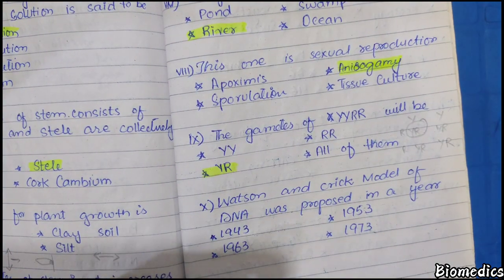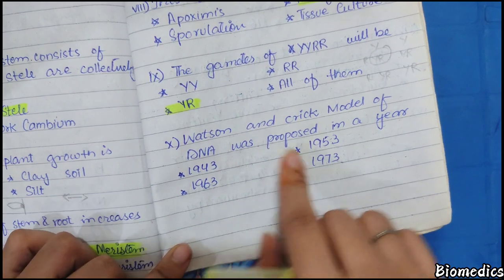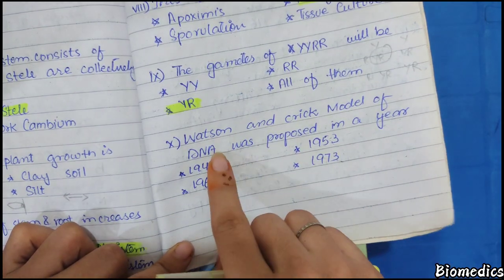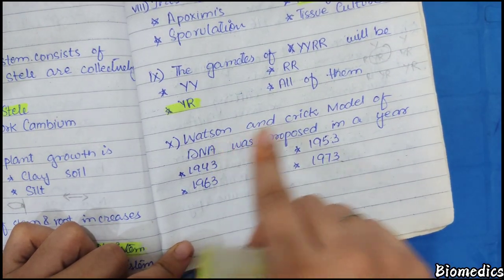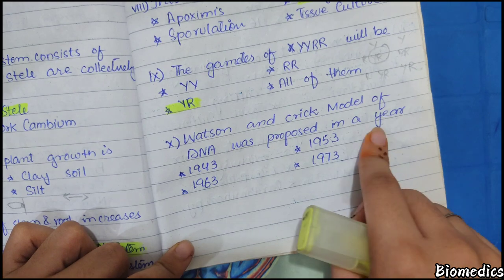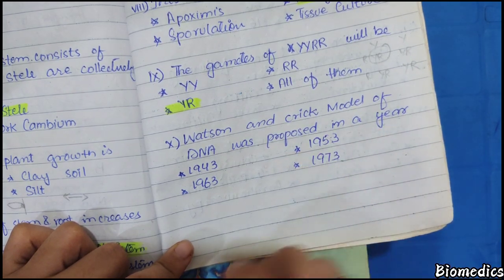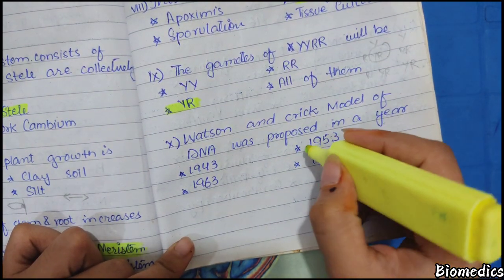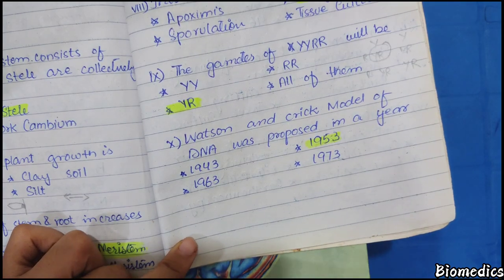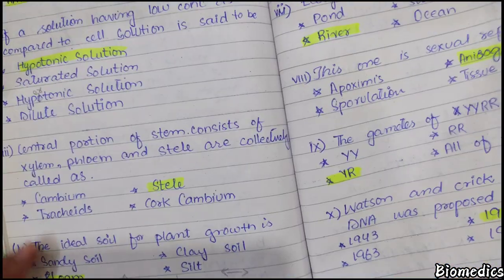Next: Watson and Crick's Model of DNA — in which year was it proposed? You have to remember the year 1953. Watson and Crick's model of DNA was proposed in 1953.